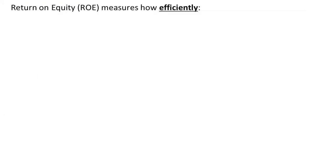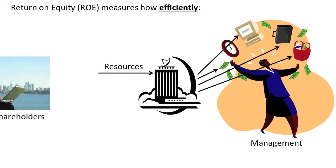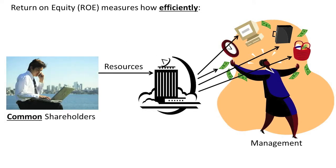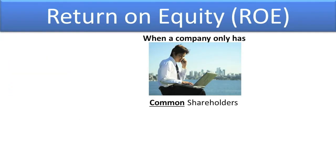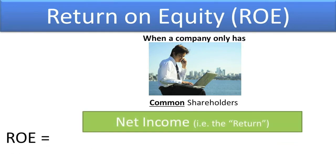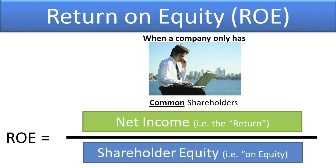The Return on Equity Ratio measures how efficiently management uses resources provided by common shareholders to generate profits. When a company only has common shareholders invested in the company, the ROE is computed as follows: Net Income divided by shareholder equity, which is the return on equity.